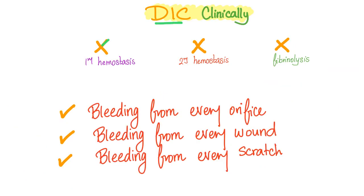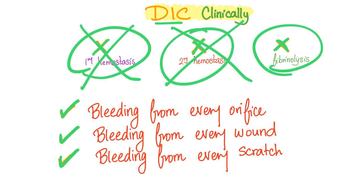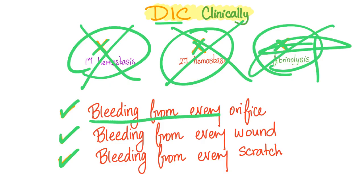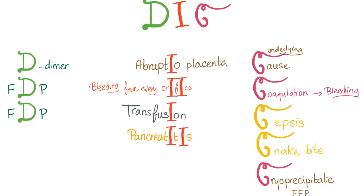DIC clinically: primary hemostasis is gone, secondary hemostasis is gone, fibrinolysis is overactive. I bleed from every orifice, every scratch, every wound. Here is the mnemonic — D-I-C.